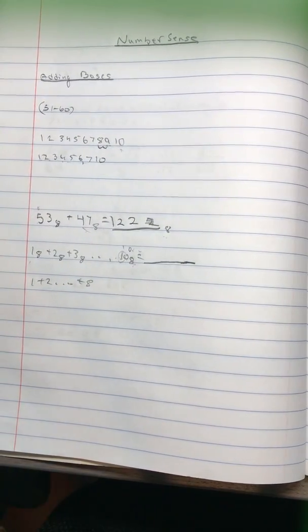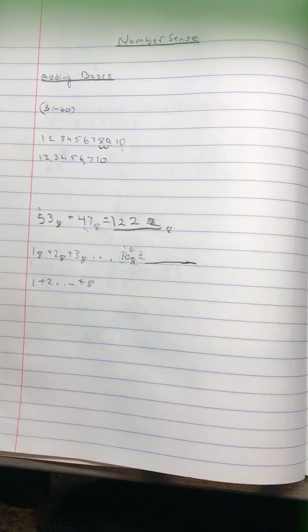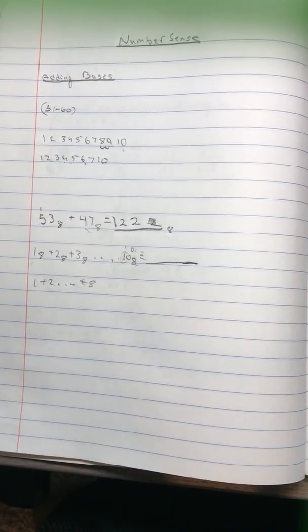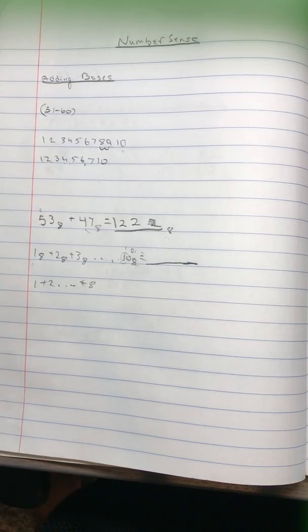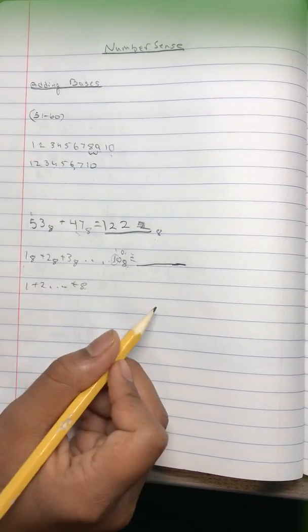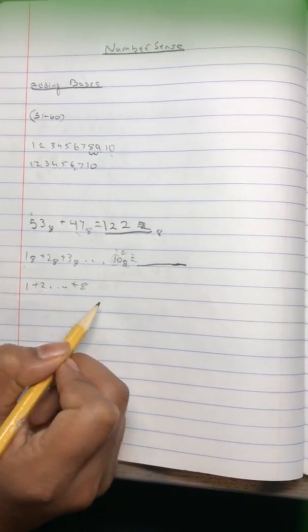So you just add 1 to 8, that's 9. 9 times 8 divided by 2 is 4. 9 times 4 is 36, and that's the answer. But we're not done just yet, we have to convert it back.